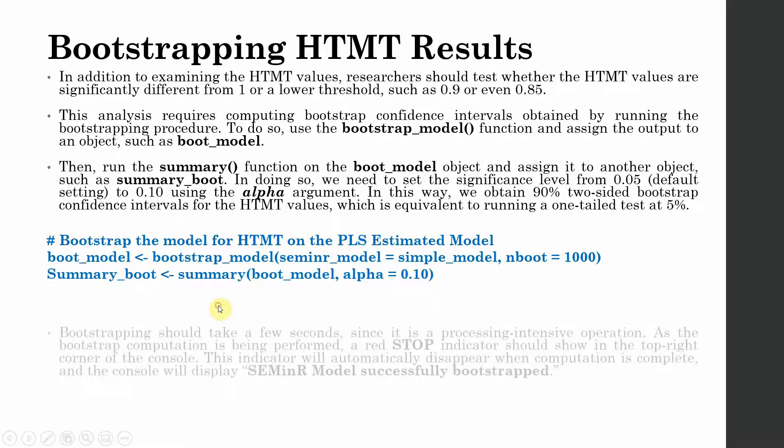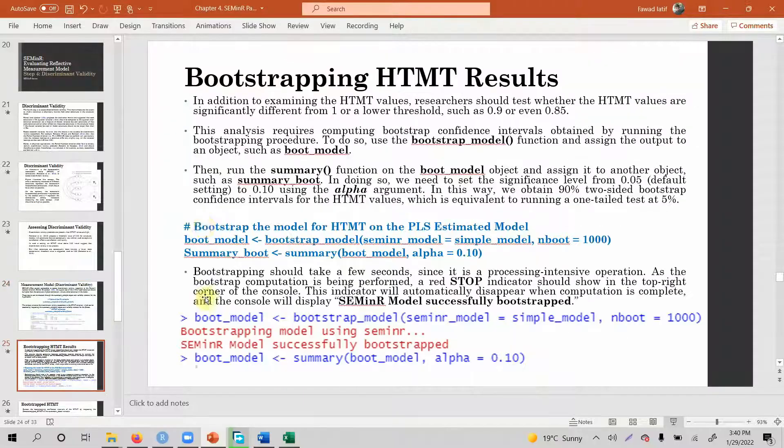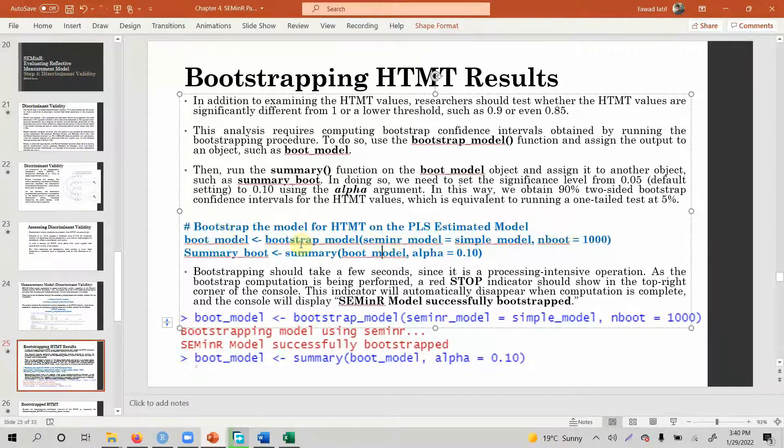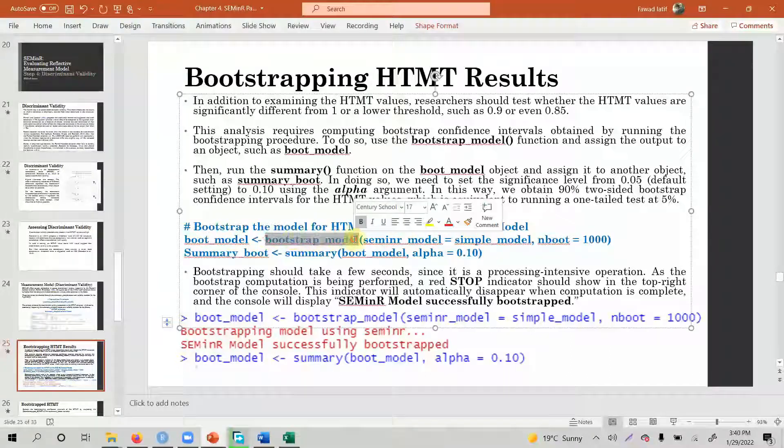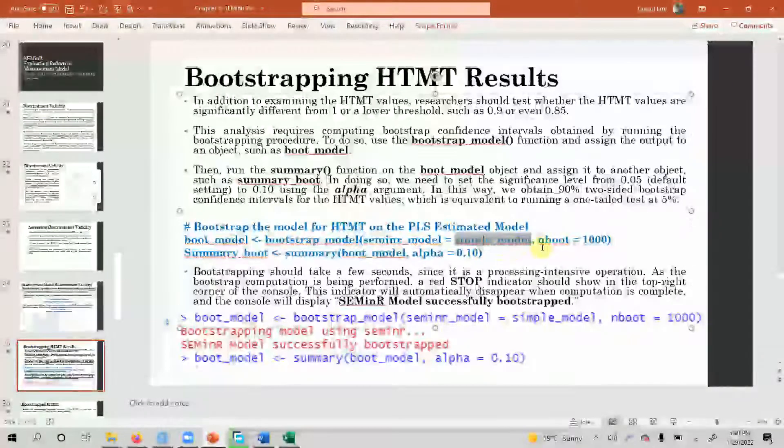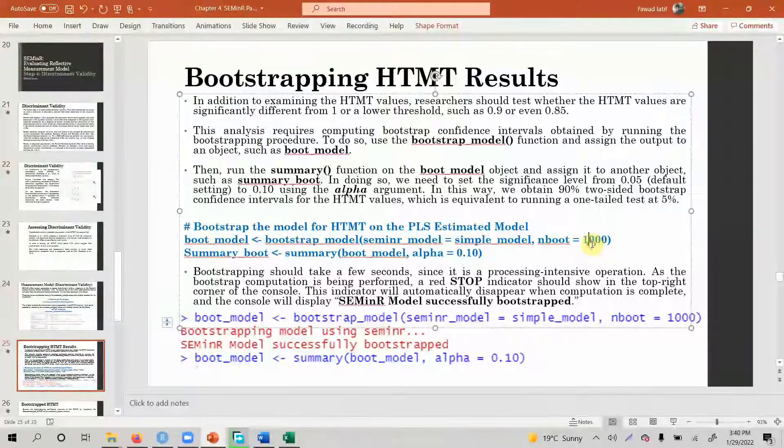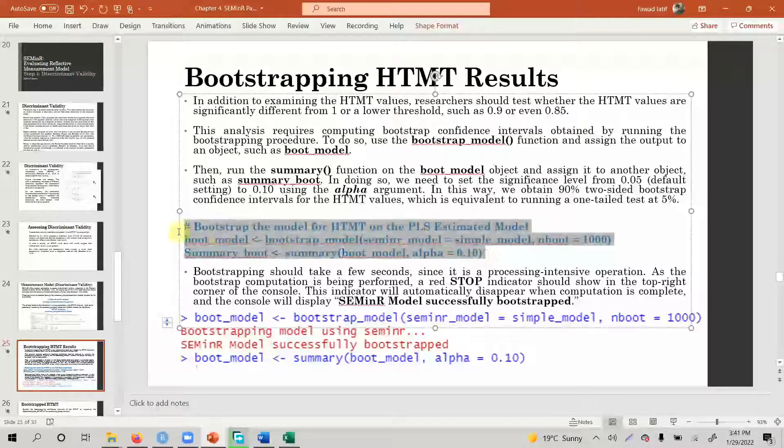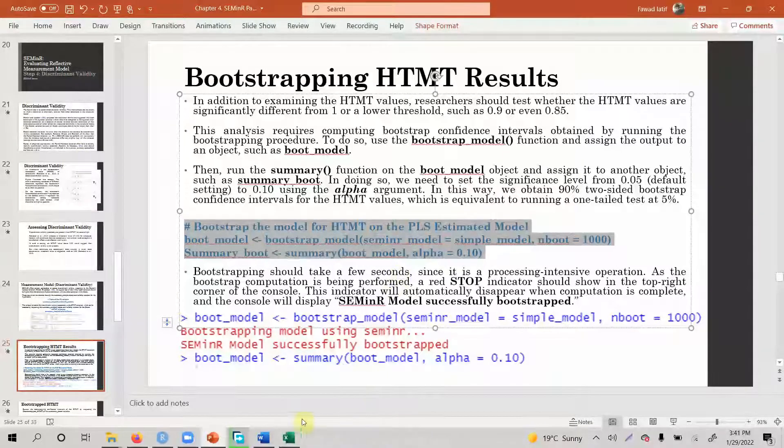Let's do this again. I'm going to come back to this slide. But first, let's run our bootstrap model. Let's copy this. If you look here, this is your bootstrap model function. What model you want to estimate? Again, that PLS model that we estimated simple underscore model and your bootstrapping size normally is recommended to have 10,000. But for now, we are going to keep it to 1000. And then we are going to assign the summary output from this bootstrapped model to summary underscore boot. And we are going to keep the alpha value to 0.10.